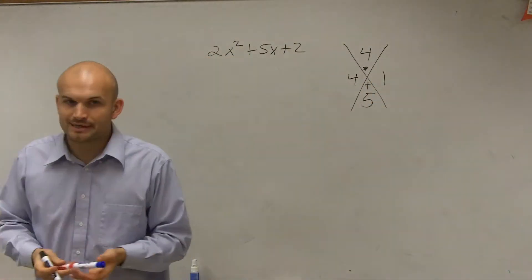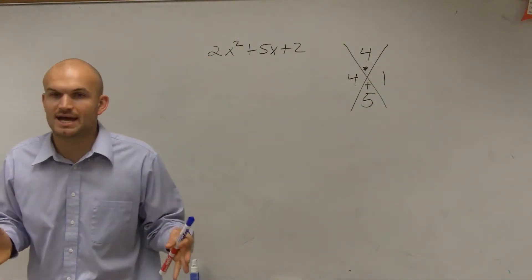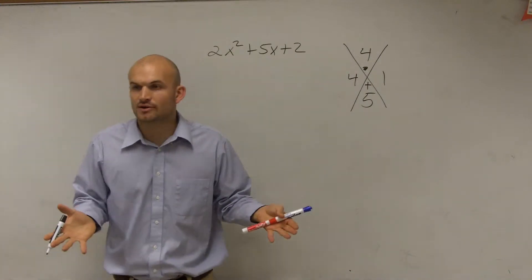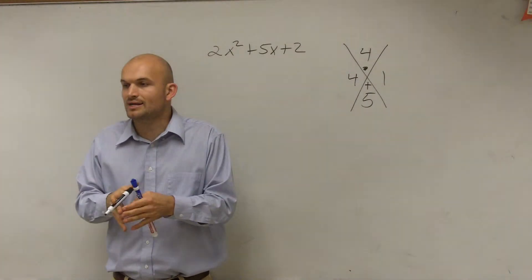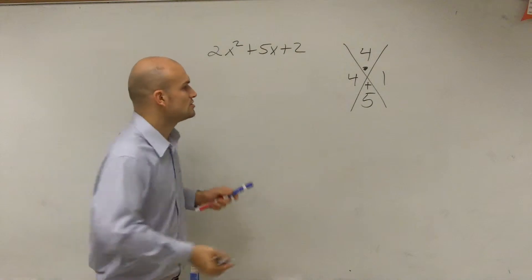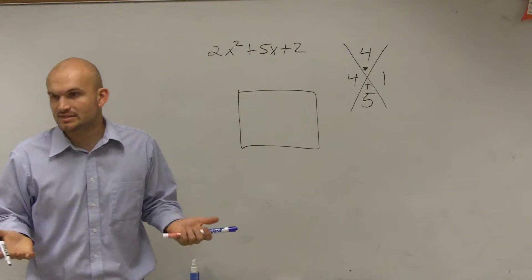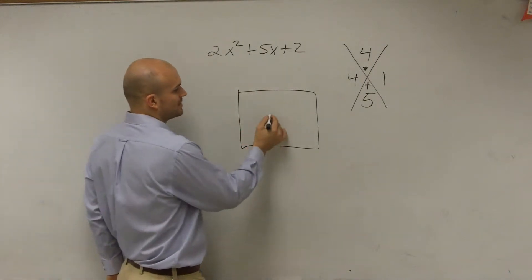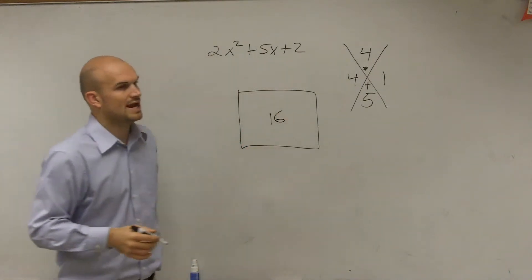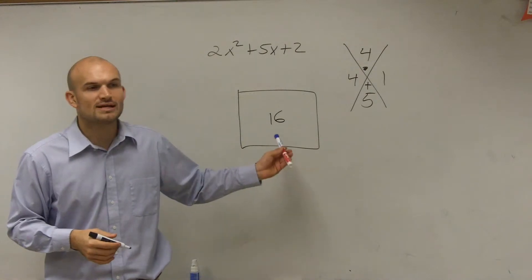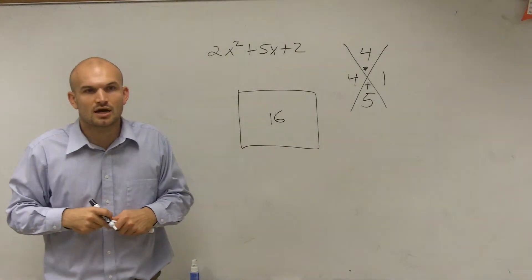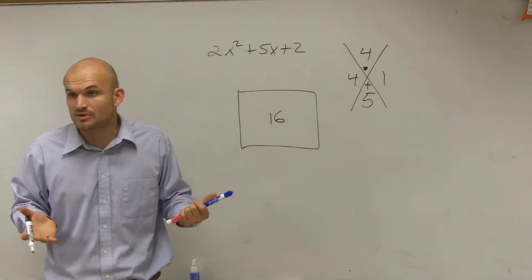In factoring, we think of multiplication. Factoring is writing a product as multiplication. The way we like to think about this sometimes is if you look at a rectangle—this is what I explained last class period. If I give you an area of 16,